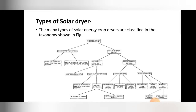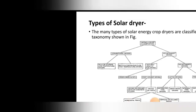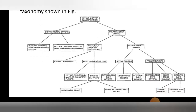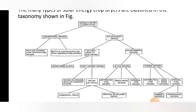There are so many types of solar dryers. Let's first see the classification of solar dryers. The many types of solar energy crop dryers are classified in a taxonomy as shown in the figure. Solar dryers are basically classified into two categories: conventional dryers and solar energy dryers.